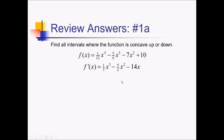We need a second derivative now. So we have 3 times a third, that's going to be just 1, x squared. And then for this next one, 2 times 5 halves conveniently gives us just minus 5x. And then finally, this negative 14x is now a negative 14.